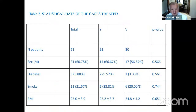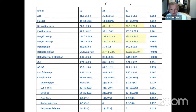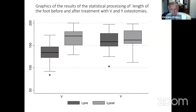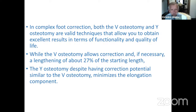Comparing the two osteotomies in 21 Y osteotomy patients and 30 V osteotomy patients: the amount of lengthening was much bigger with V osteotomy than Y osteotomy. Distraction time was less in Y osteotomy than in V osteotomy. Because Y osteotomy is only corrective in complex foot deformity. Both techniques are valid, but Y osteotomy does not permit lengthening, whereas V osteotomy can achieve lengthening of about 27% of the initial length. Thank you very much for your attention.